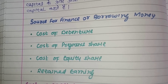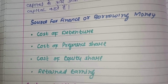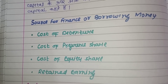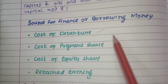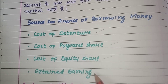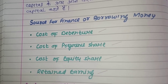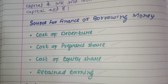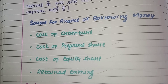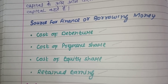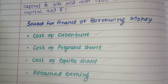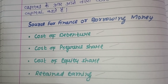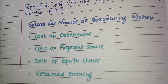Now, what are the sources of borrowing money or finance? Paisa aapko kahan kahan se mil sakta hai? Sources kya hai? Basically aapke 4 sources hai: cost of debenture, cost of preferential, cost of equity share, and retained earnings are the sources of borrowing money or sources for finance. Aapka paisa in chaar sources se le sakte ho — by debenture, preferential, equity share, ya phir retained earnings ke through.